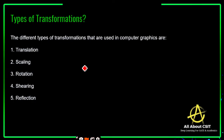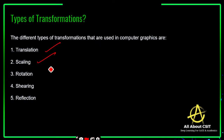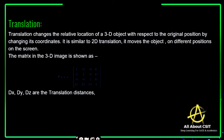Now coming to the different types of transformations. The different types of transformations used in computer graphics are translation, scaling, rotation, shearing, and reflection. Let's try to understand each and every type of transformation.